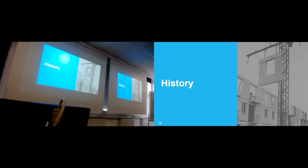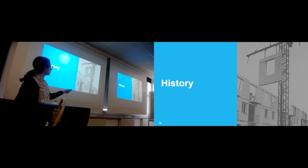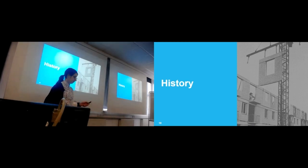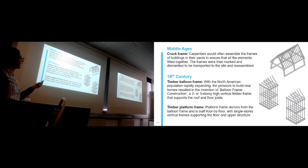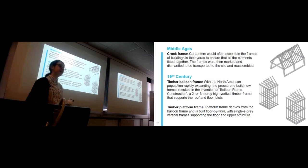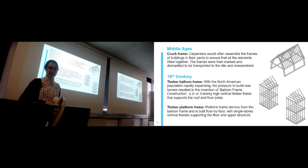Many of you will be familiar with the tall building blocks we see over Glasgow and Edinburgh — those were all prefab, all offsite as well. But it goes back even more, even to the Middle Ages, where we had cruck frame construction, where carpenters would often assemble the frames of buildings in the yard to assure all the elements could be put together on site. They would leave carpenters' marks as guidance as to what components needed to be assembled, when and where. So that was a really early form of offsite construction.